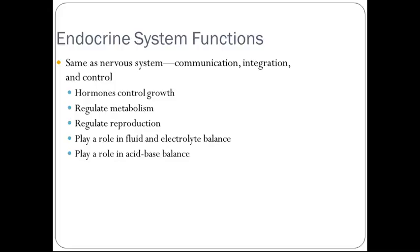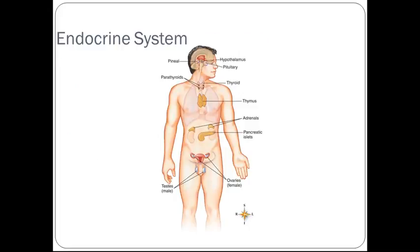Endocrine system functions, same as the nervous system. They help with communication, integration, and control. Hormones control growth. They regulate metabolism. They regulate reproduction. They play a role in fluid and electrolyte balance. And they play a role in the acid-base balance in the body. Here's a picture of some of the various endocrine glands and their location.